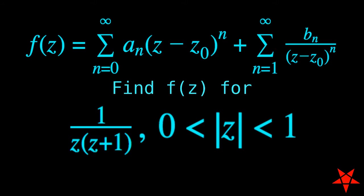This time around, we're going to find the Laurent series in an area encompassing the absolute value of z greater than 0, but less than 1.